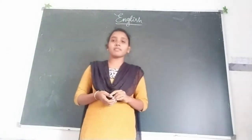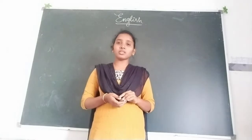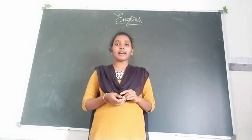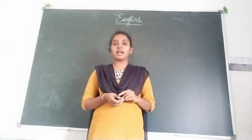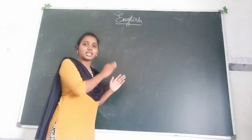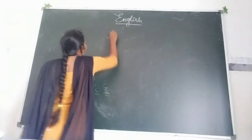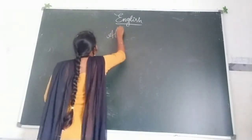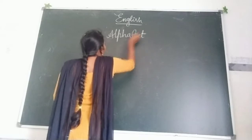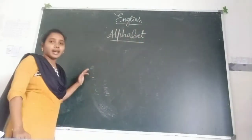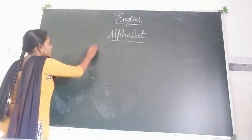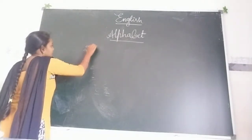First of all, in English how many alphabets are we having children? Do you know? Yes, we are having 26 alphabets. Write to the next page and keep the heading 'Alphabets', and after that keep the number 26.